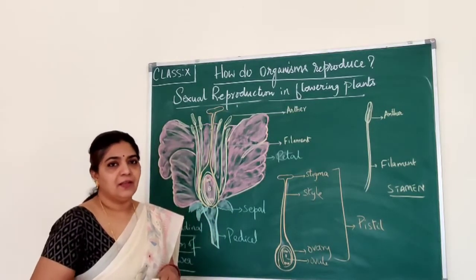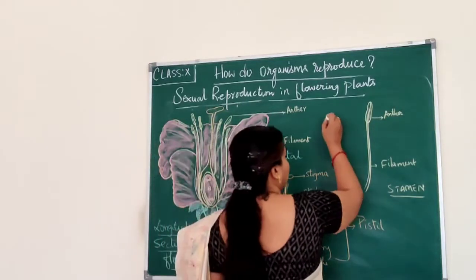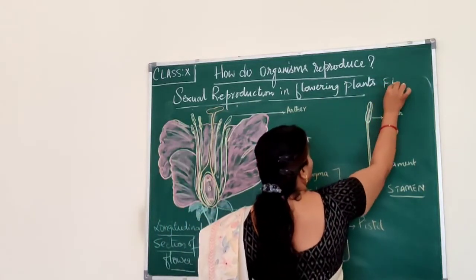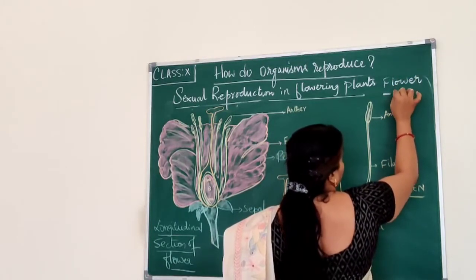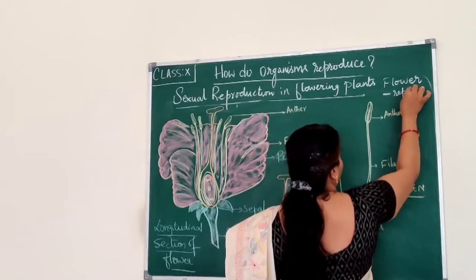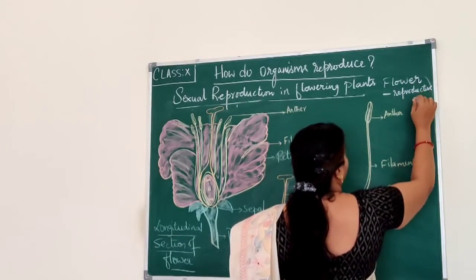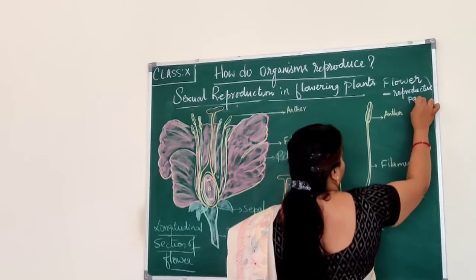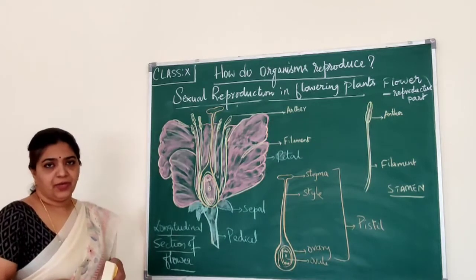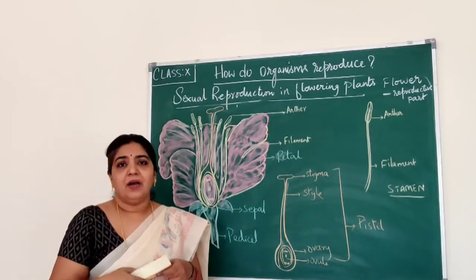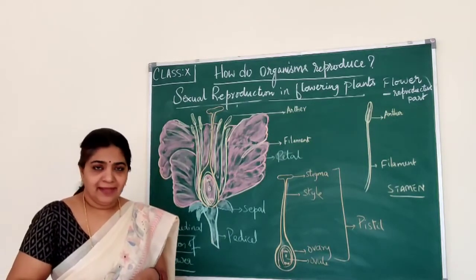When I say flowering plants, let us see what a flower is. A flower is the reproductive part of the plant. It is actually a modified stem — the stem is modified and developed into a flower to take up the function of reproduction.